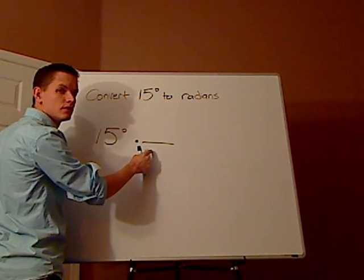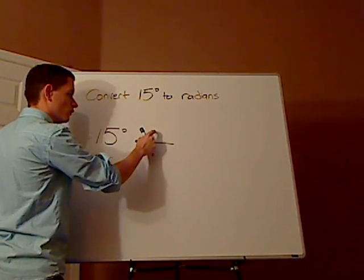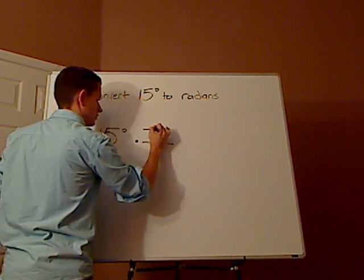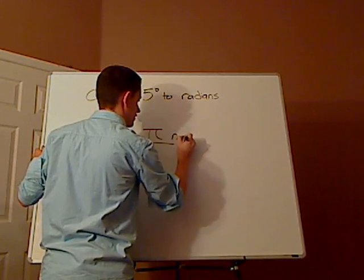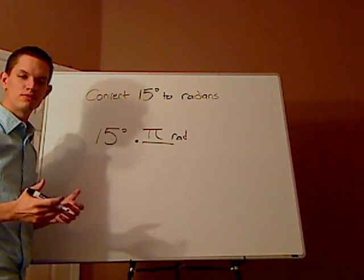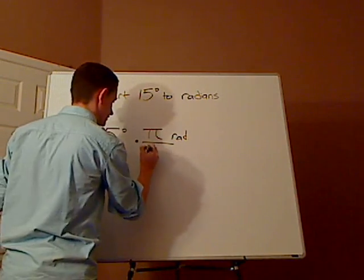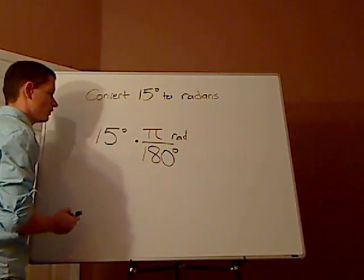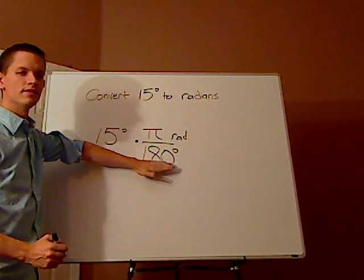So we want radians. What we want is going to go in the numerator. So that's going to be pi radians. Now what is the same as pi? Very good. It's 180 degrees. And whatever we want to cancel out, you put it in the denominator.